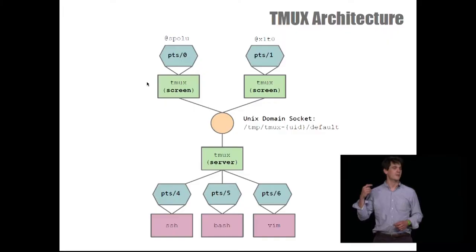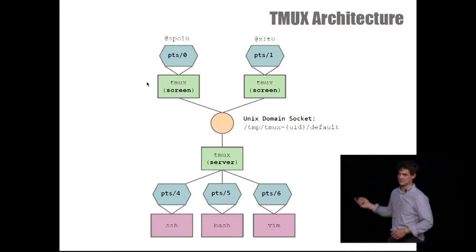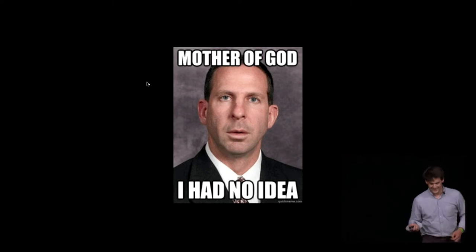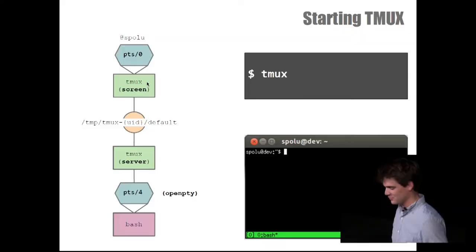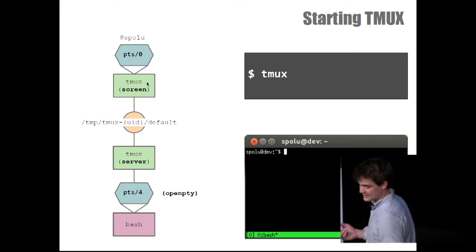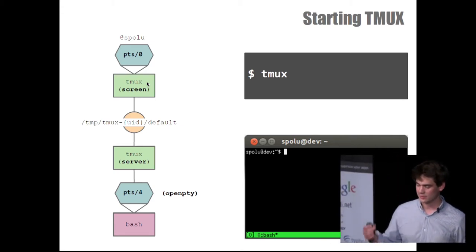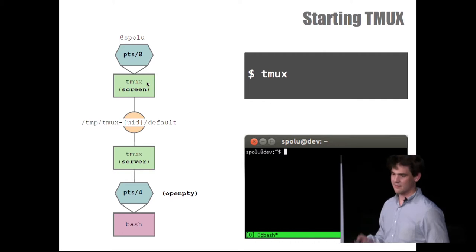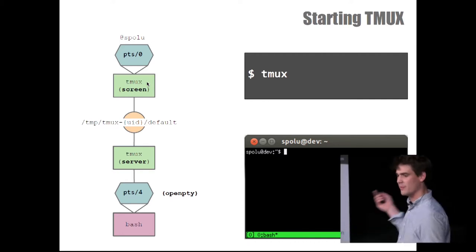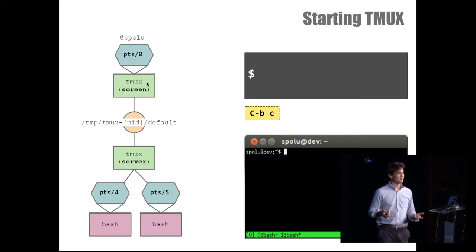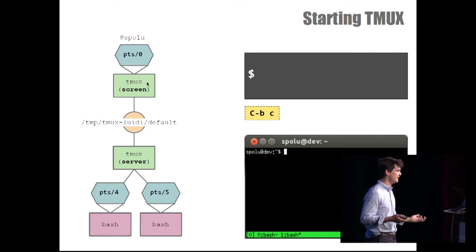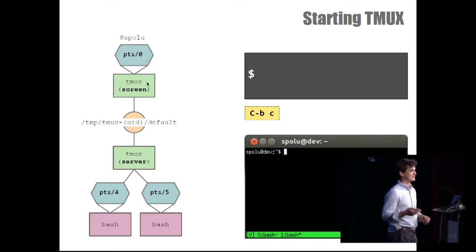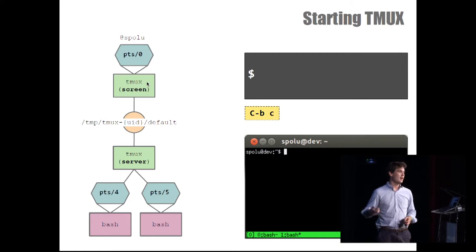So I'm a heavy user of Tmux. When you run Tmux, it's a client-server architecture, which means that you've got a client that gets attached to your terminal. It connects to a server through Unix domain sockets, and the server attaches to a new terminal through the OpenPTY system call and attaches itself to a new bash. So the first feature is to run multiple programs in the same terminal. When you type Control-B-C, it creates a new tab, and a new pseudo-terminal opens on the server attached to a new bash.